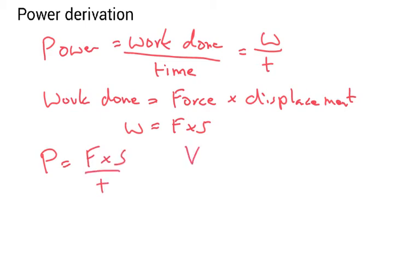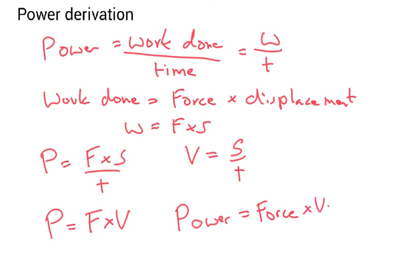But velocity is equal to the rate of change of displacement, which is S over t. If you look here, I've got S over t here and S over t here, so I can just say P is equal to F times V. Power is equal to force times velocity.